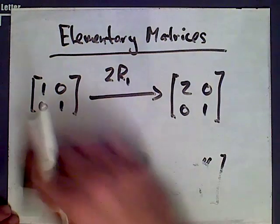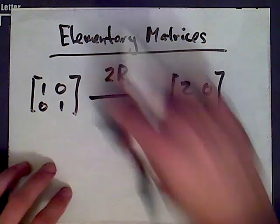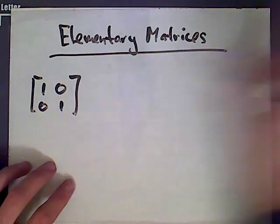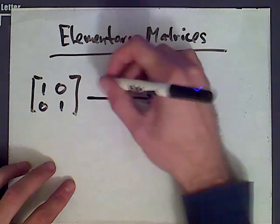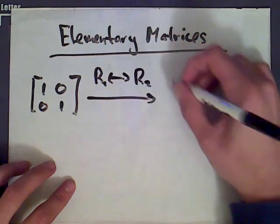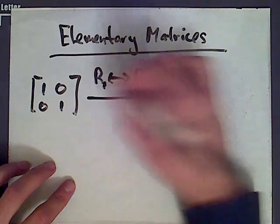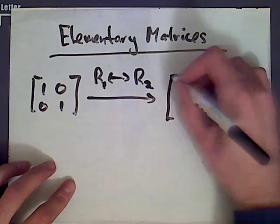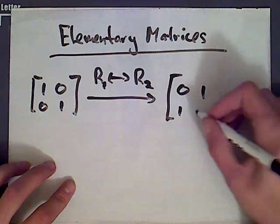Alright, let's look at the two other types of row operations. What if we switch row 1 and row 2? The matrix you get, this is row 1, switch it with row 2. The matrix you get is 0, 1, 1, 0.